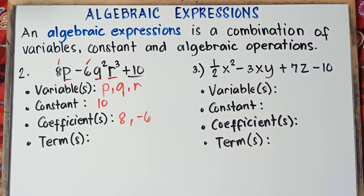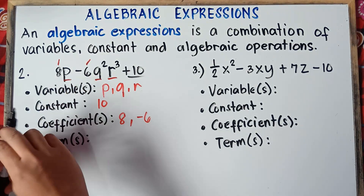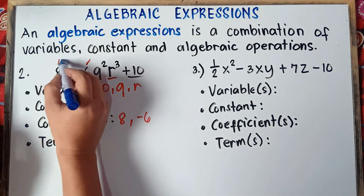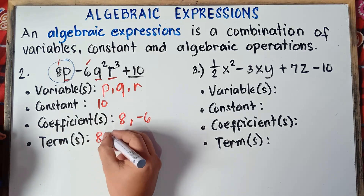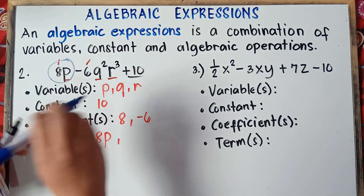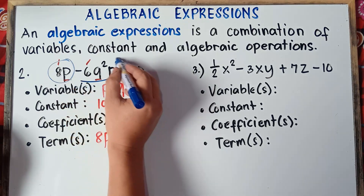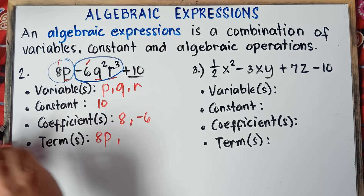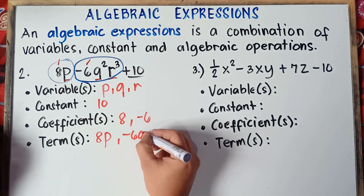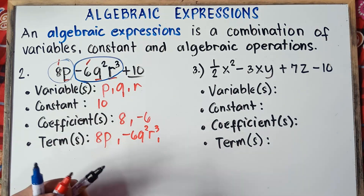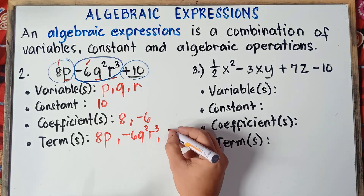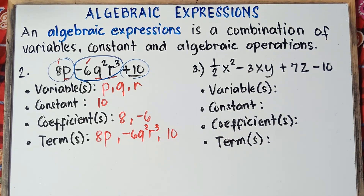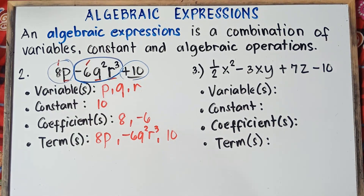For the terms, separated by plus and minus signs: our first term is 8p, second term is negative 6q squared r cubed (include the minus sign), and our last term is positive 10. That's the answer for example number 2.